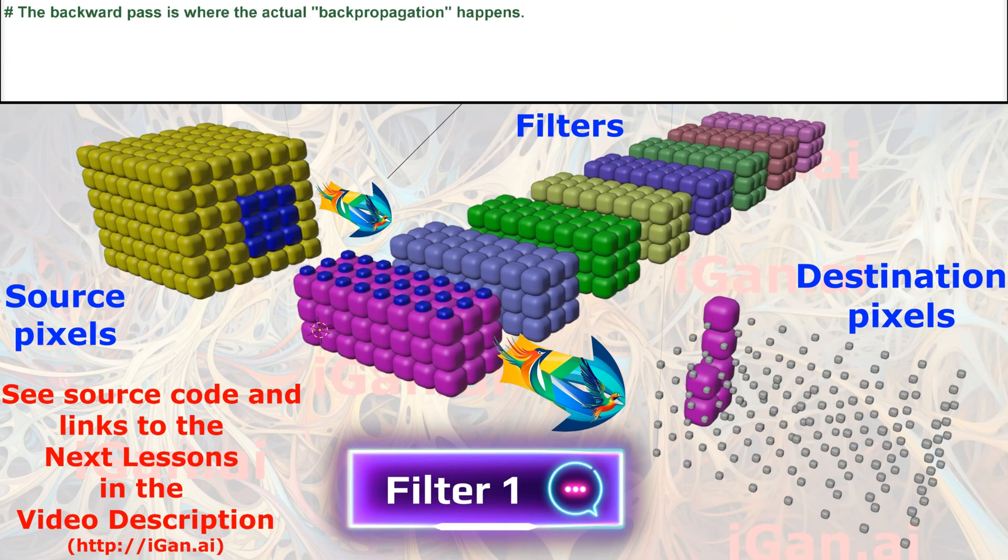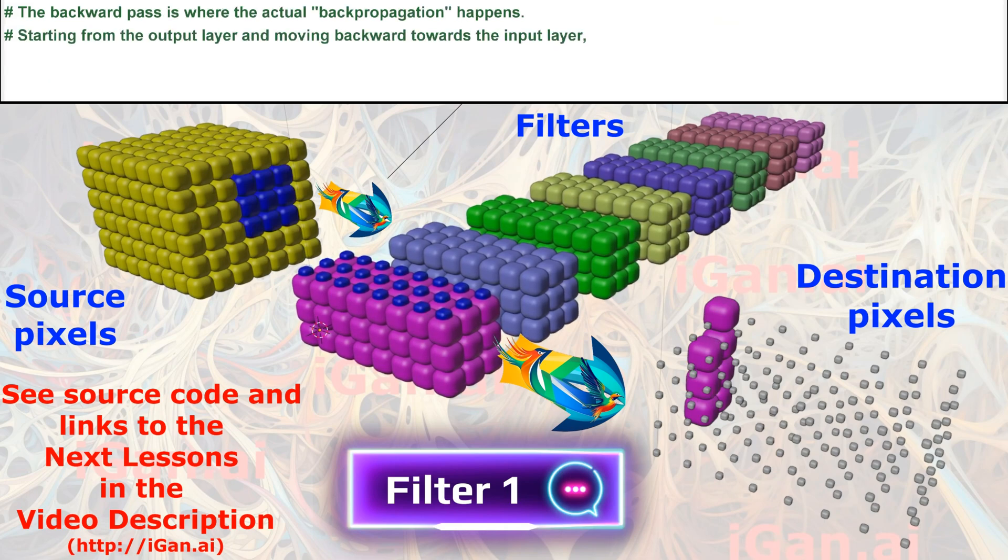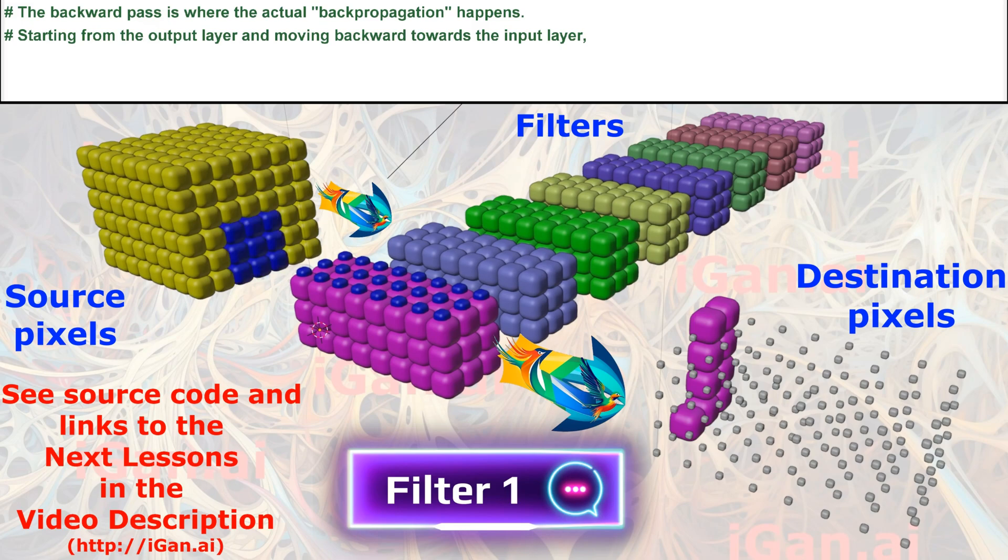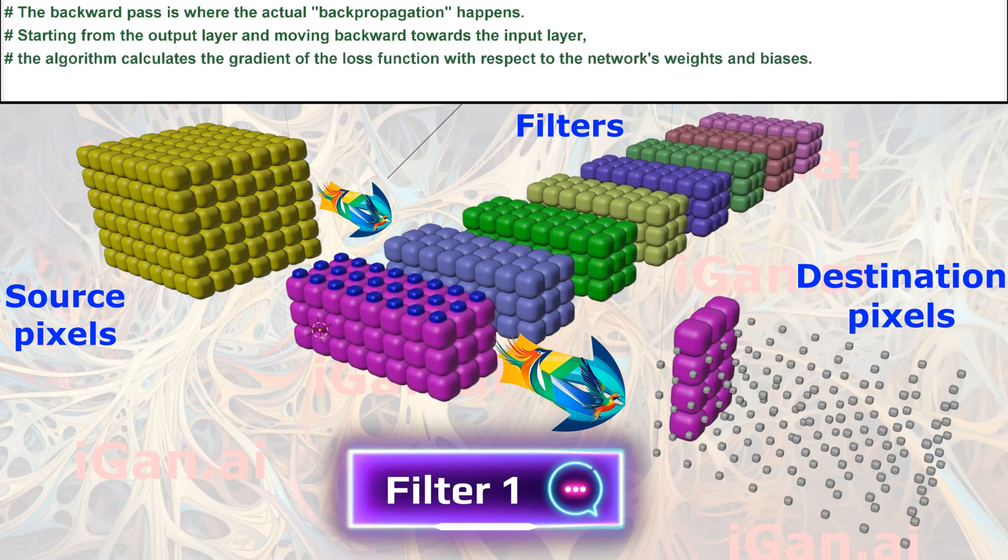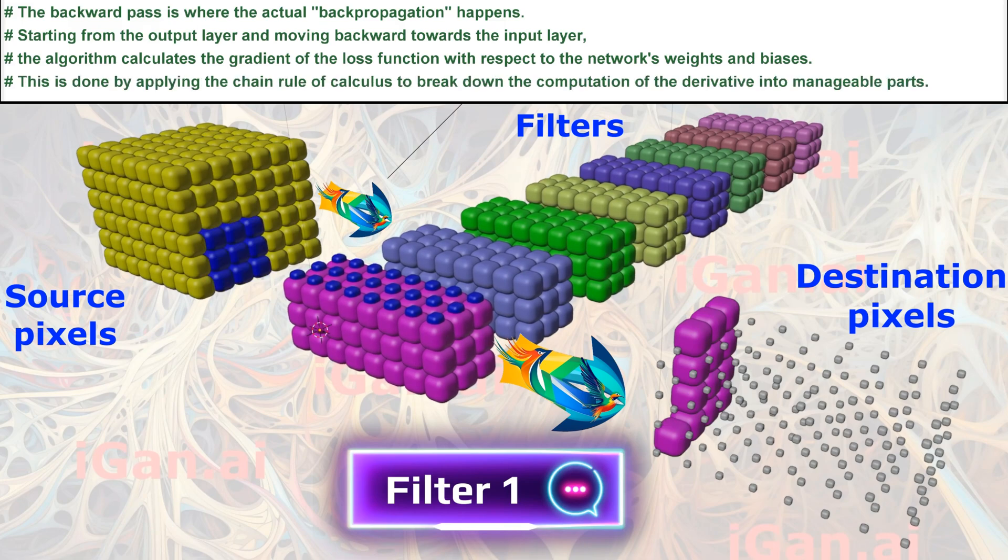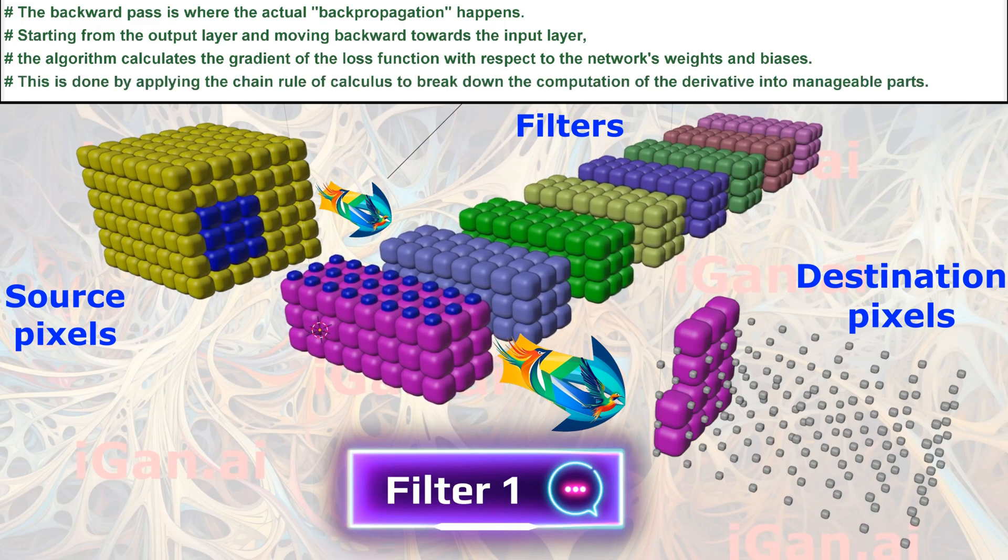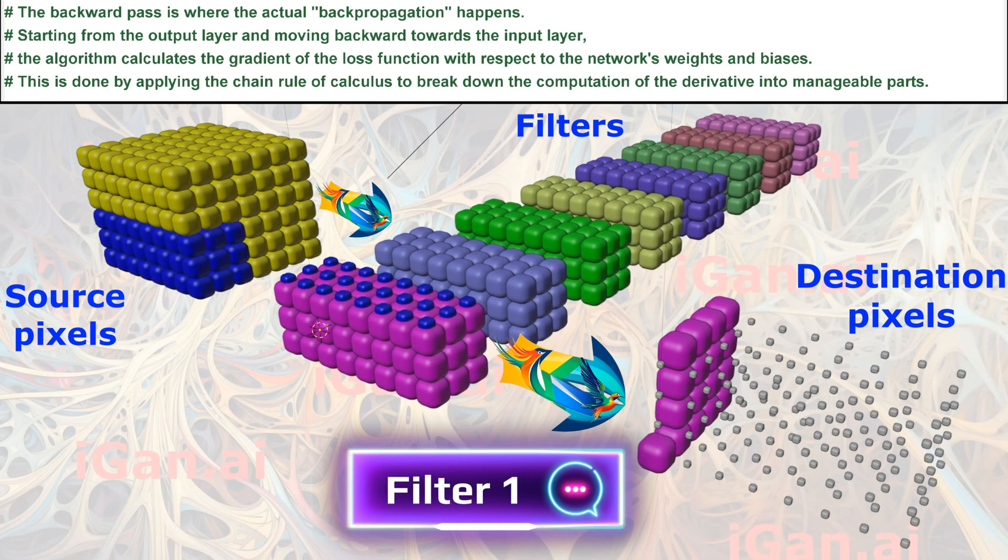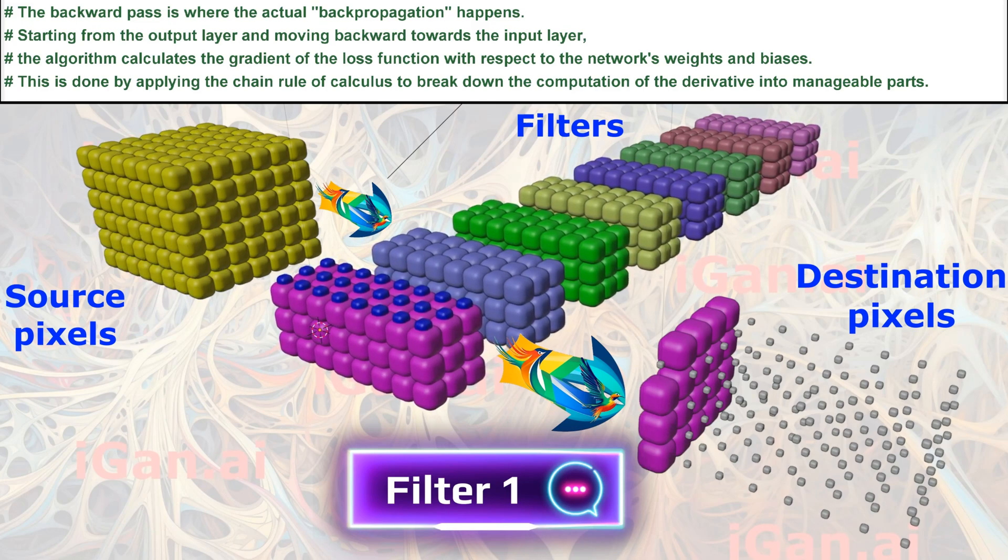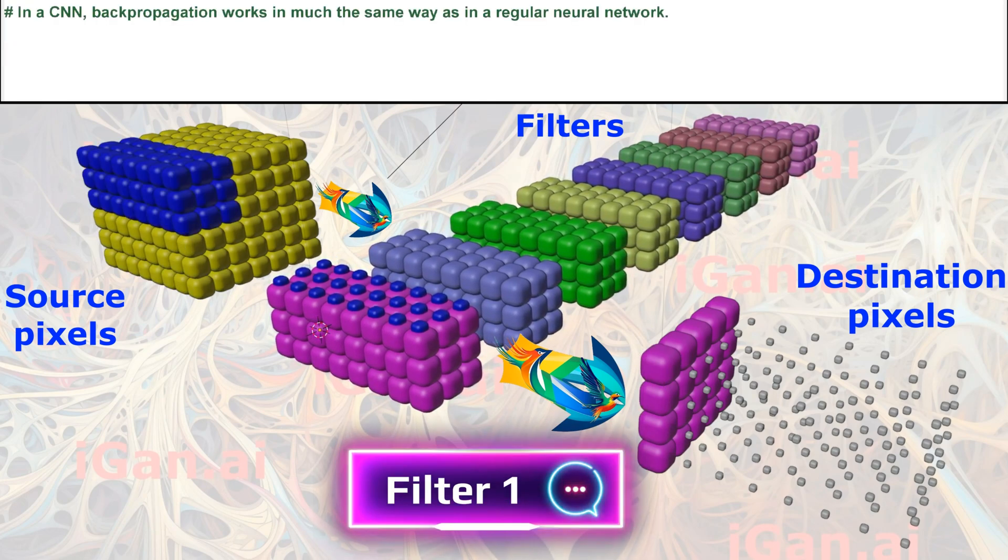The backward pass is where the actual backpropagation happens. Starting from the output layer and moving backward towards the input layer, the algorithm calculates the gradient of the loss function with respect to the network's weights and biases. This is done by applying the chain rule of calculus to break down the computation of the derivative into manageable parts.